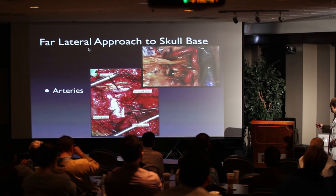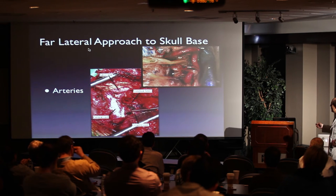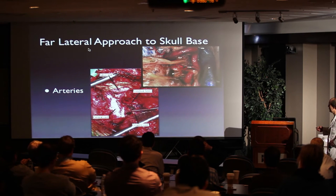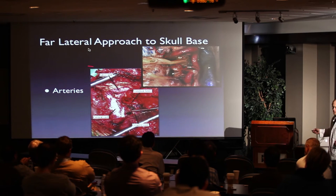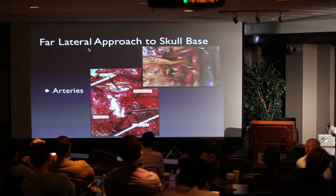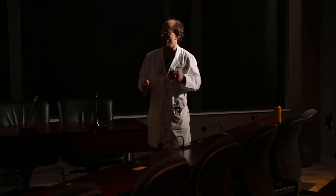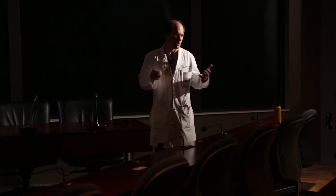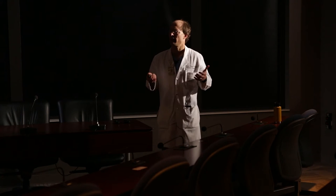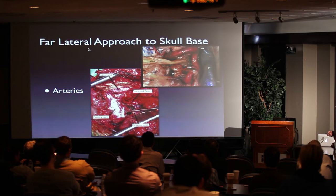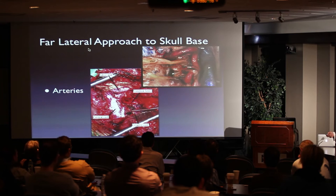Regarding arteries, the vertebral artery is the obvious one. In the V3 segment there's a horizontal segment, a vertical segment, and another horizontal segment. If you want to identify the vertical segment, follow C2 out — it always crosses the posterior aspect of the vertebral artery. You also have the posterior meningeal artery and the recurrent meningeal artery to be aware of. Occasionally you can get arterial bleeding and think you've hit the vertebral, but it's just the posterior meningeal. Also be cautious of the occasional PICA that comes off extradurally.